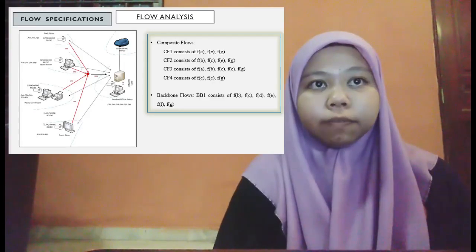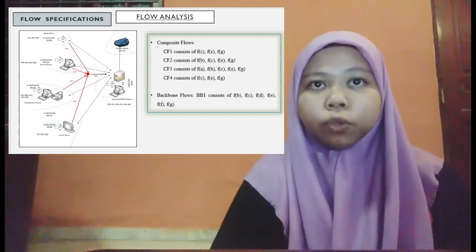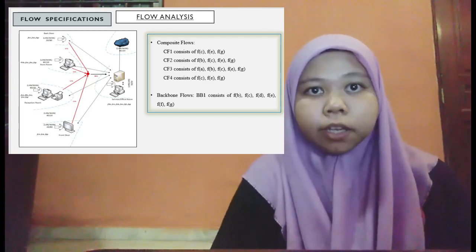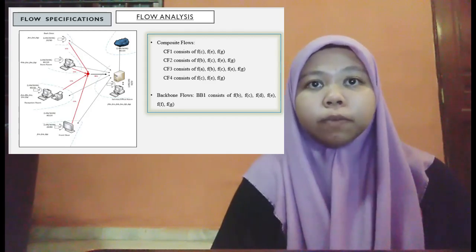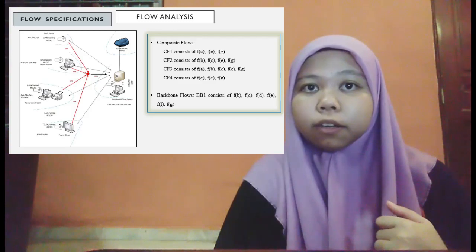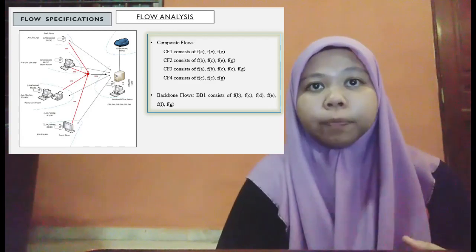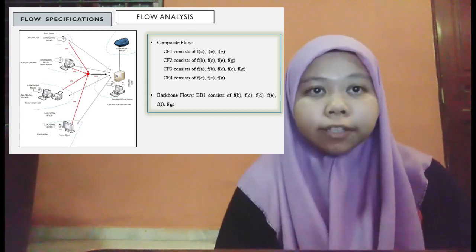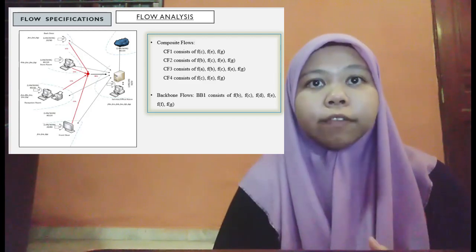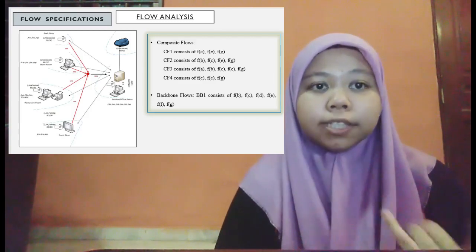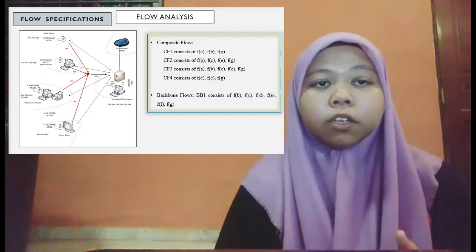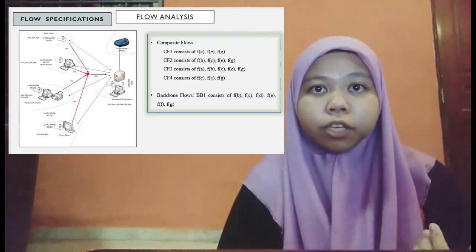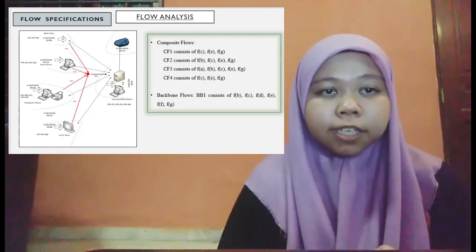Next is flow specification. There will be 2 flow types: composite flow and backbone flow. For composite flow, there are 4 composites — CF1 through CF4. CF1 consists of flows C, E, and G. CF2 consists of flows B, C, E, and G. CF3 consists of flows A, B, C, E, F, and G.